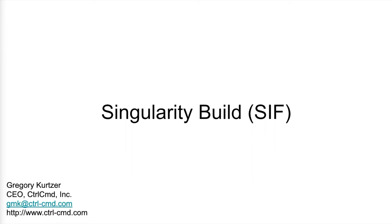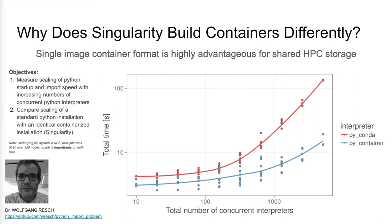This talk is about building containers with Singularity. A common requirement among HPC systems is a performance-focused shared file system. This shared file system must be able to provide data in parallel to massive numbers of compute resources. Given that this is a universal requirement of HPC clusters, we chose to leverage this to store and execute containers in parallel on these systems. To do this, we created the Singularity Image Format, or SIF for short.